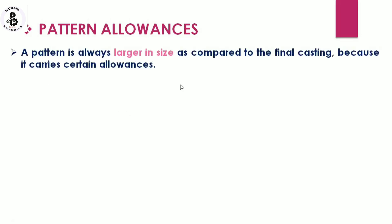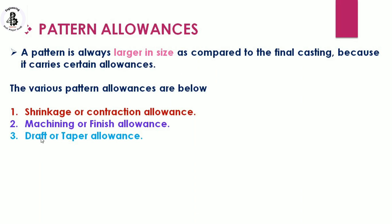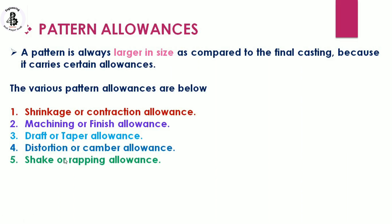For good dimensional accuracy in the casting process, different pattern allowances are used. A pattern is always larger in size compared to the final casting because it carries certain allowances. The various pattern allowances are: first, shrinkage or contraction allowances; second, machining or finishing allowances; third, draft or taper allowances; fourth, distortion or camber allowances; and fifth, shake or rapping allowances.